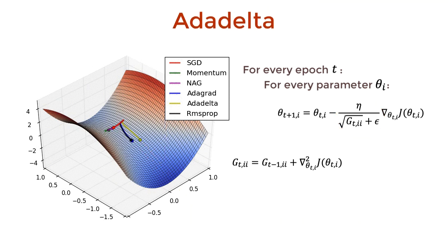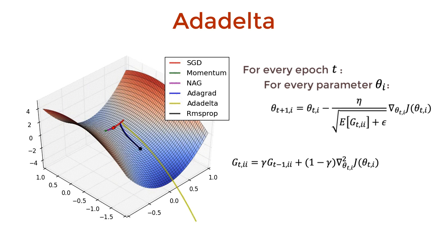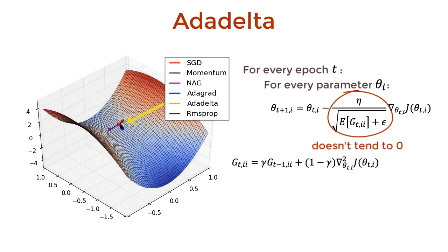Adadelta to the rescue. It reduces the influence of past squared gradients by introducing a gamma weight to all of those gradients. This reduces their effect by an exponential factor. So the denominator doesn't explode, and this prevents the learning rate from tanking to zero.